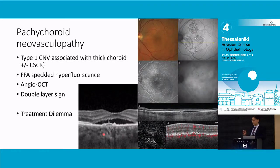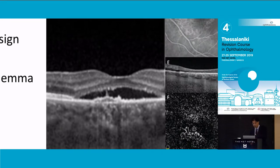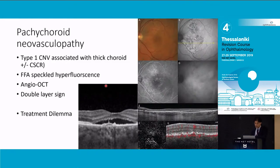It's now found - now we've got angio-OCT - that in certain studies up to 20% of CSRs going on for three to six months will have this separation of RPE and Bruch's membrane. Where if it's near the fovea, as opposed to the periphery, with an acute CSR, it may be that they've got a type 1 CNV complex. And this is where it gets to the treatment dilemma.